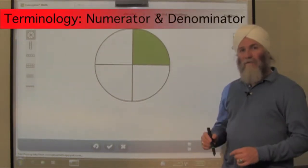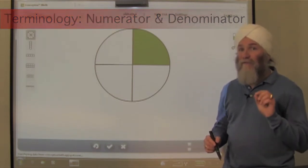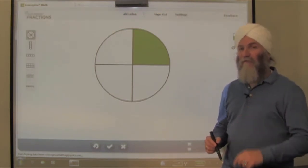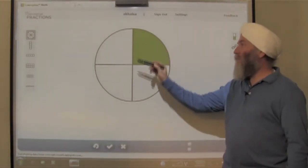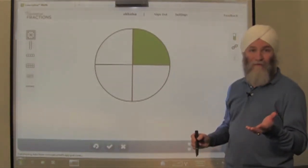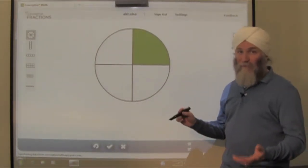We're going to use this computer model to discuss the terms numerator and denominator, and these are very important words when we're studying fractions. Here we have a circle that's been divided into four equal parts and we can call those fourths. One of them has been shaded. We can say that one-fourth of the circle has been shaded.